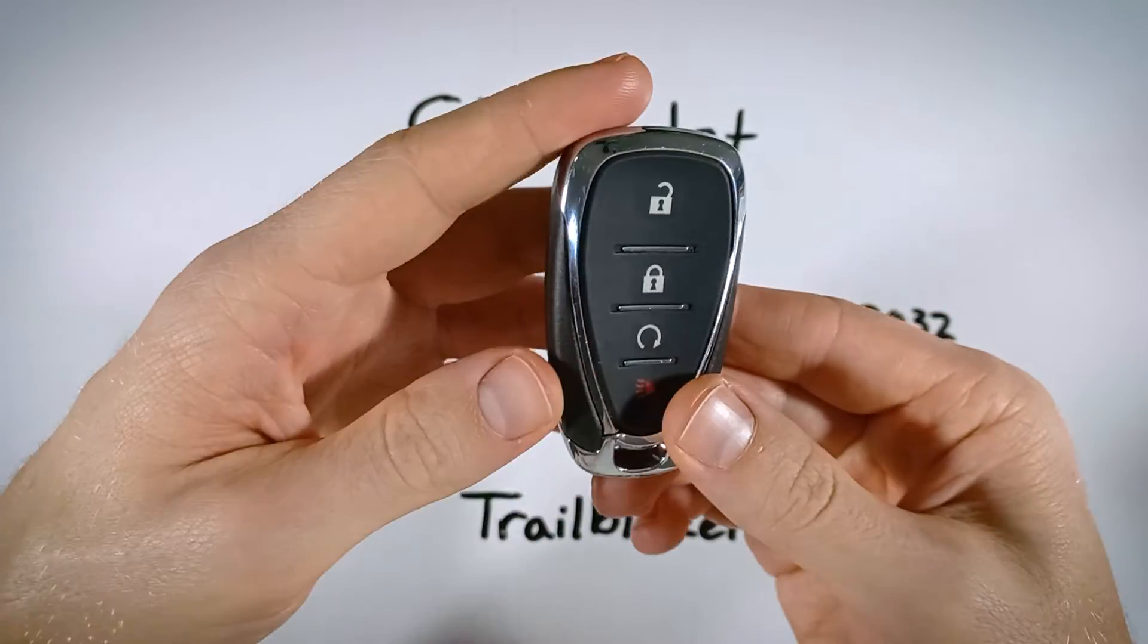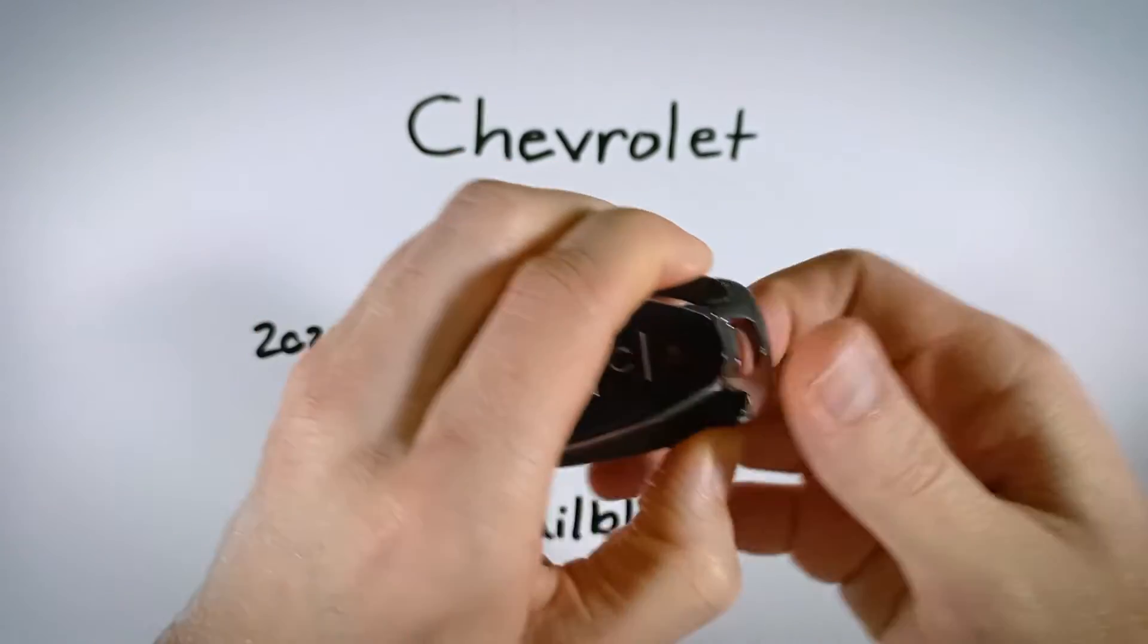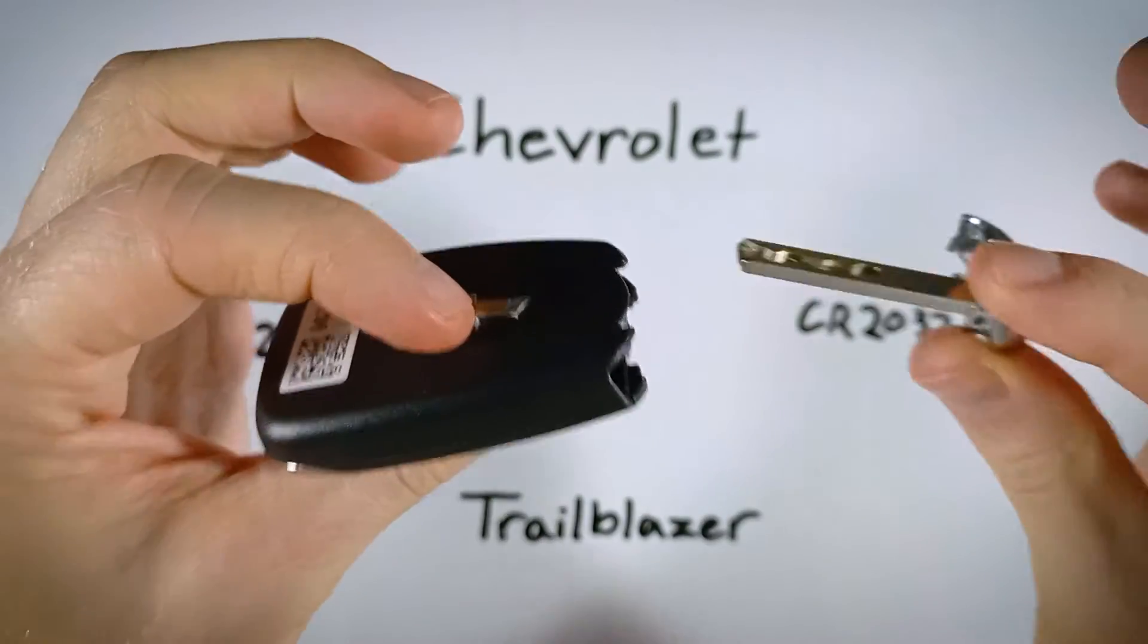First step is to look on the left side of your device. Right at the bottom, you can see that silver button. Hold that down and pull out your internal key.